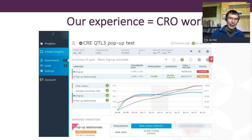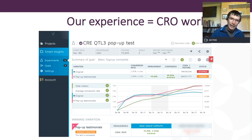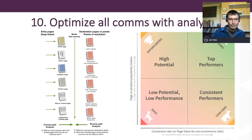For A/B testing, we used something called Convert.com. For a simpler solution I would take a look at Google Optimize, which integrates — as many A/B testing tools do — with that platform.